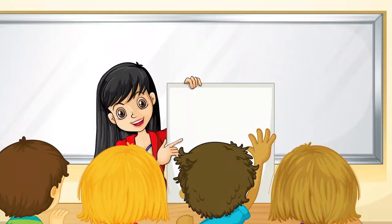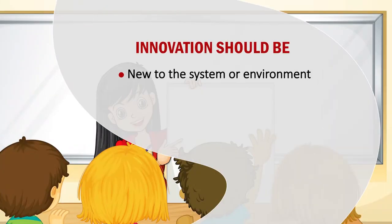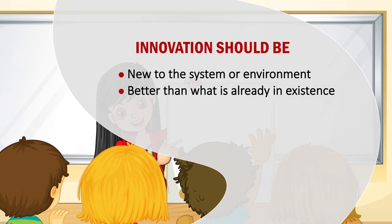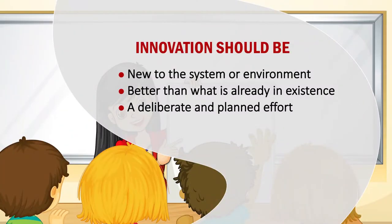So what should innovation be? First, innovation should be new to the system or environment, and it should be better than what is already in existence. If an innovation is not better, or it is just a repetition of what already exists somewhere, then it is not innovation. Sometimes an innovation may have taken place somewhere else, but if you are introducing it for the first time in your system or environment, then for your system it is an innovation.